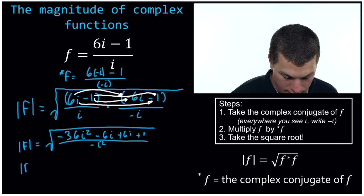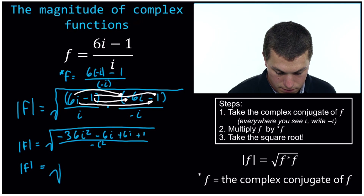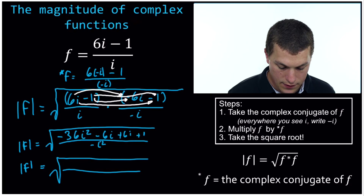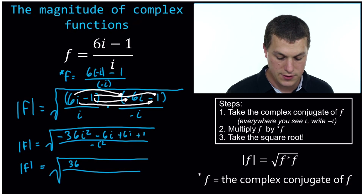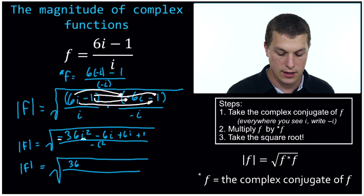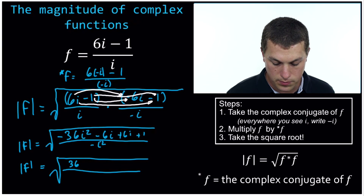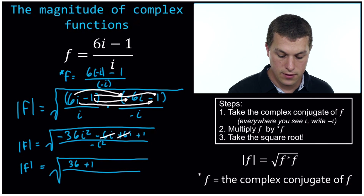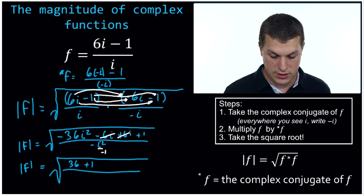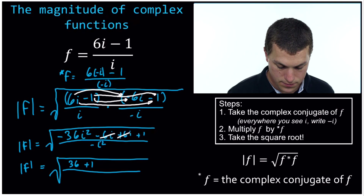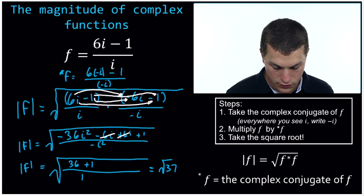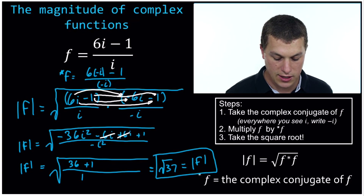Now we simplify. i squared gives us negative 1. So negative 36 times negative 1 gives us positive 36. Then minus 6i plus 6i cancels. And we have plus 1, all over negative i squared. Negative i squared is negative times negative 1, which is just 1. So we're left with 36 plus 1 over 1, and we get the square root of 37. So the magnitude of that number, which looked like it was getting messy for a second, turned out to be not so bad.